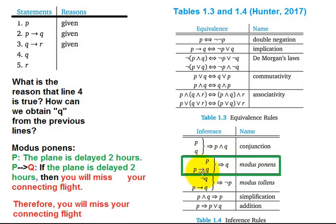So that's the idea. If you've got P and you have P then Q, the result is that Q must be true. And that's exactly what we have in lines 1 and 2. That implies that Q must be true.